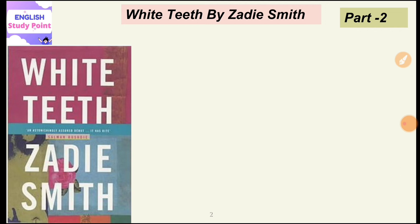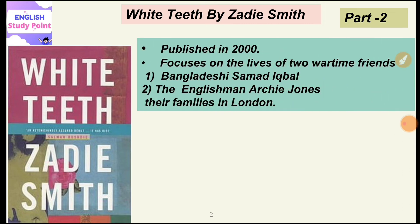We also find that clashes appear between second generation children and their parents because their parents try to give them advice on different matters, which they consider unimportant. They think they are only enough to take decisions in their own life, so they try to ignore their parents' advice and feel their parents are interfering. Now, this particular novel was published in the year 2000.